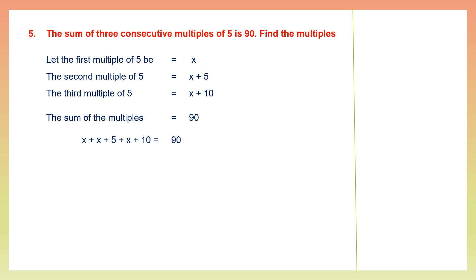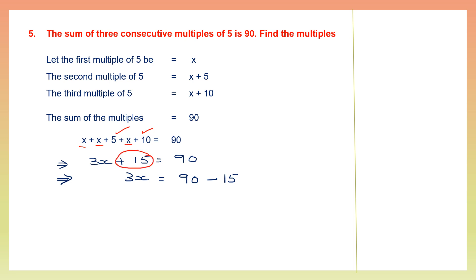Counting all the x terms: 1, 2, 3, so we have 3x. The whole numbers: 5 plus 10 is 15. So 3x plus 15 equals 90. To find the value of 3x: 3x equals 90 minus 15. Subtracting: 10 minus 5 is 5, 8 minus 1 is 7. So 3x equals 75.